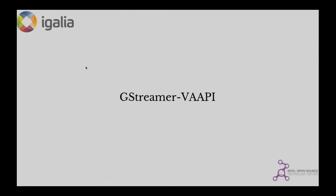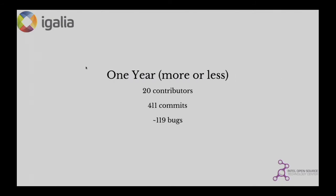So let's get into GStreamer VAPI. This is basically a wrapper for LibVA to interact through a GStreamer pipeline with the encoding, post-processing, and decoding facilities that LibVA offers. This is a report of this year: what we have done since the last GStreamer conference. We have pushed 411 commits along this year and dealt with more or less 119 bugs in Bugzilla.